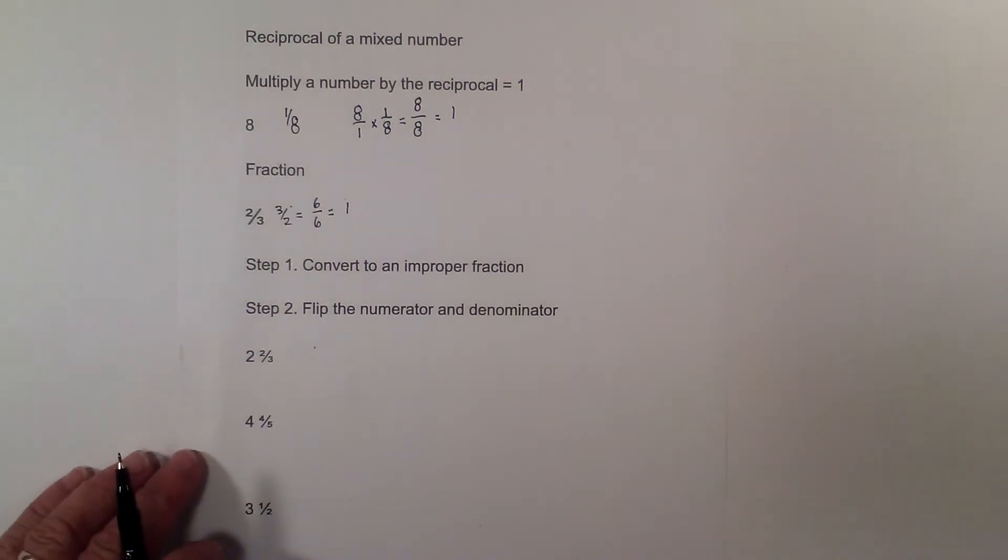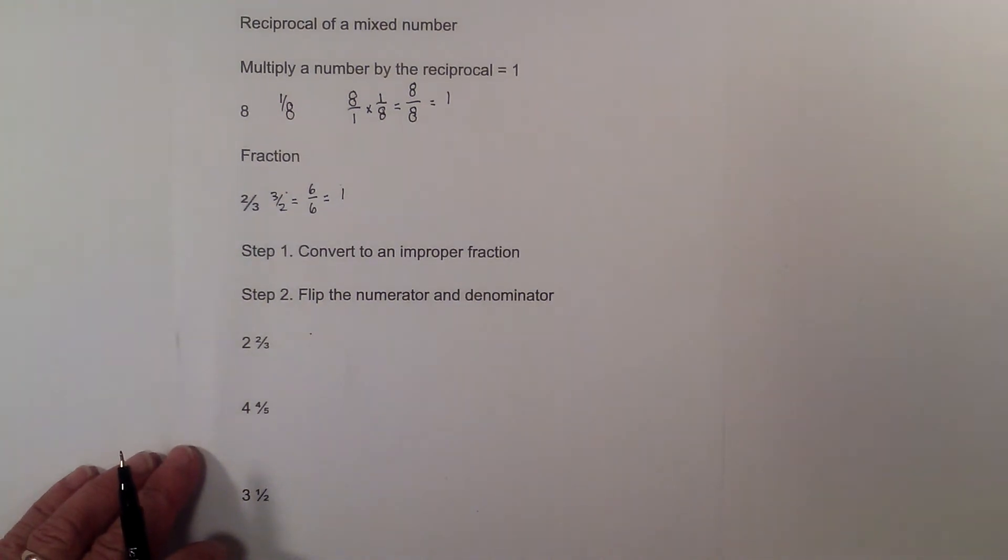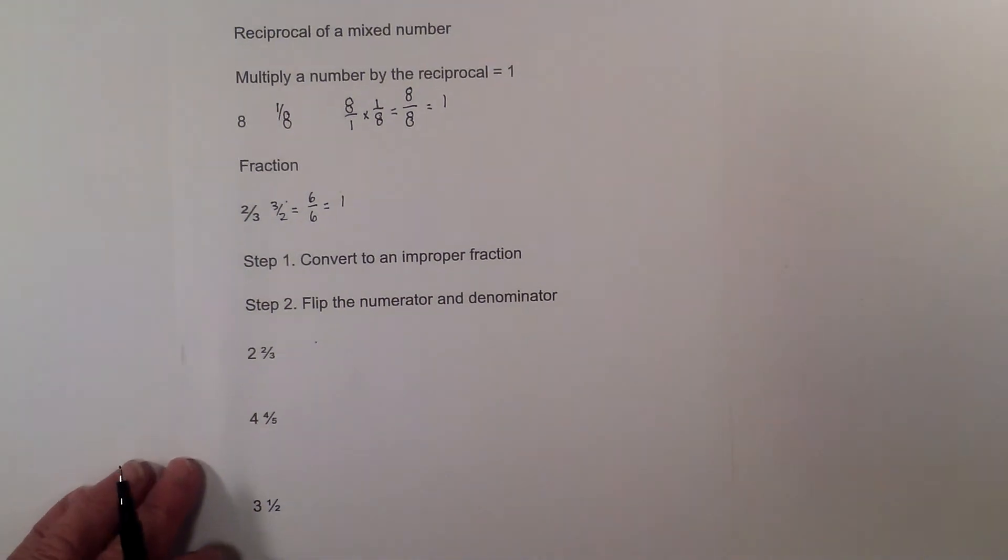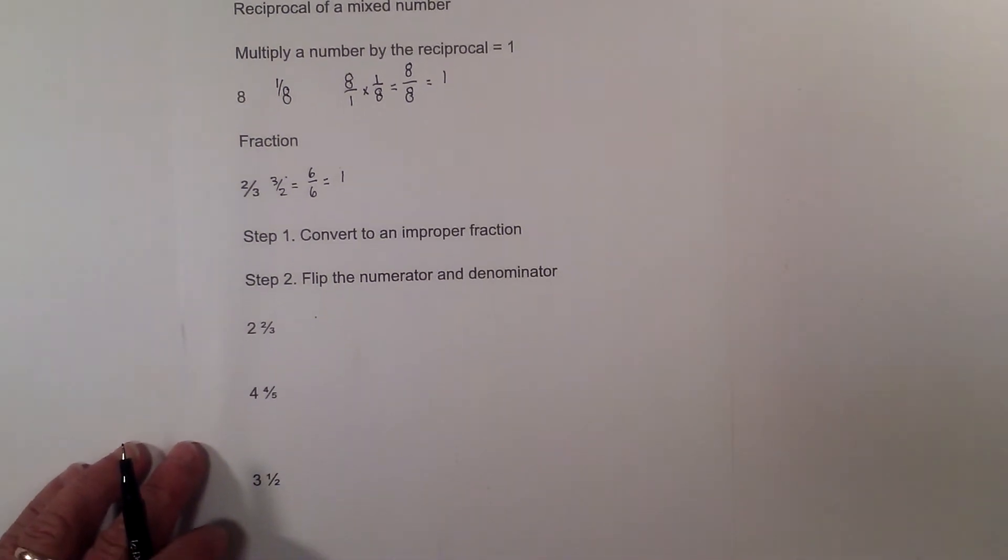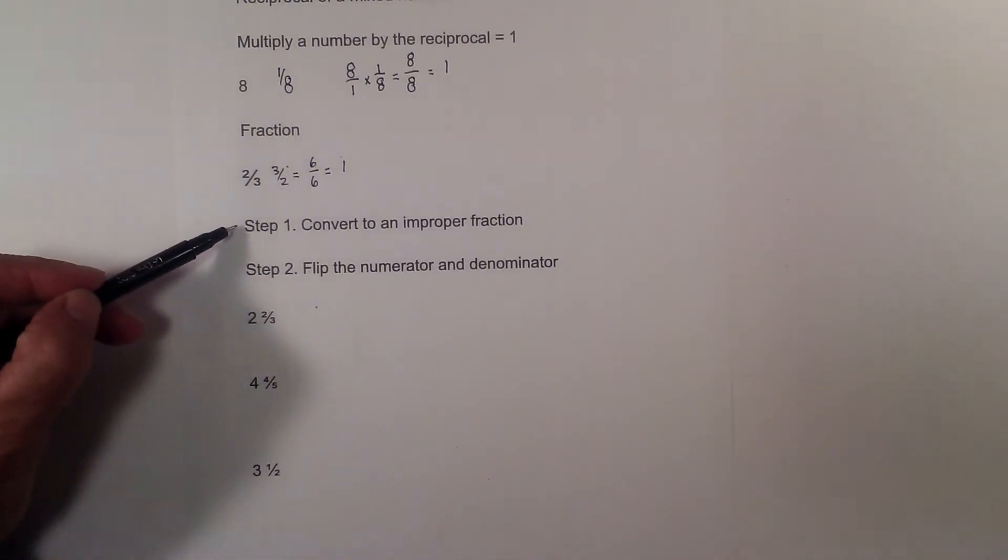So now let's figure out how to convert a mixed number. And also sometimes this is called a mixed fraction. So step 1 is you just convert it to an improper fraction, and then you flip the numerator and the denominator.